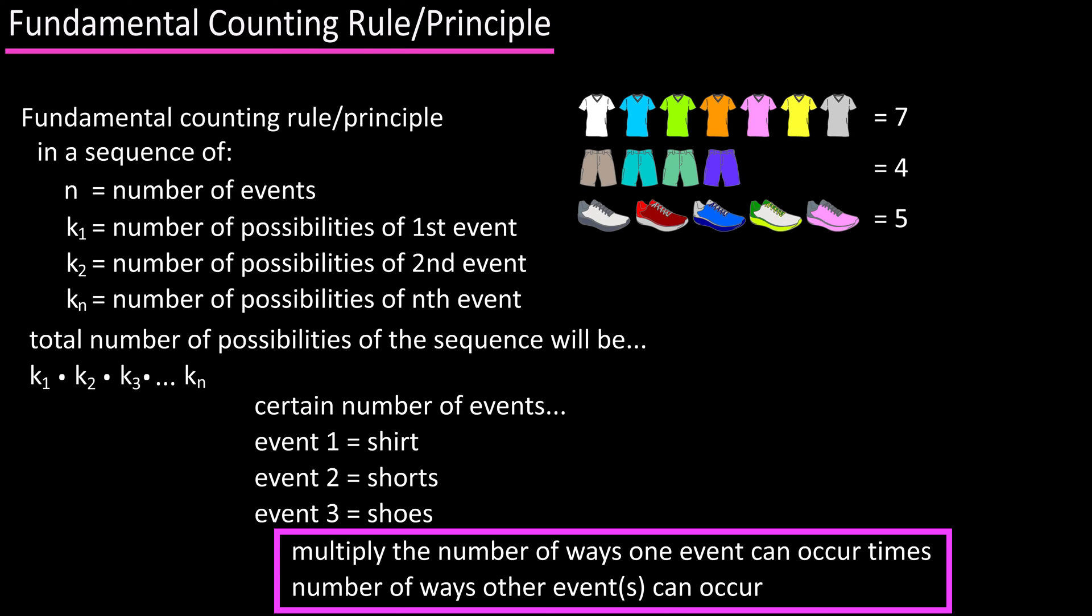So seven different colors for the shirt, four different colors for the shorts, and five different colors for the shoes. When we multiply them together, seven times four times five, we get 140 possibilities of the sequence.